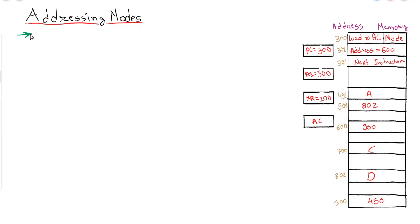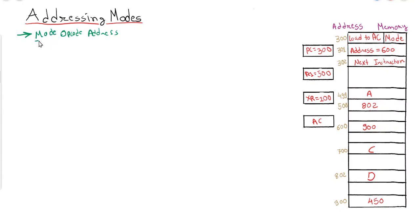Addressing modes give the programmer flexibility to use different modes in different scenarios. They also reduce the number of bits in the addressing field of the instruction. Each instruction has three parts: the address field, the opcode, and the addressing mode.